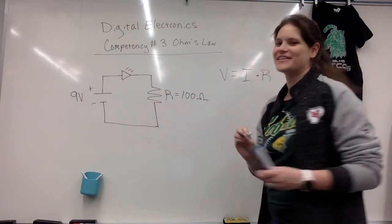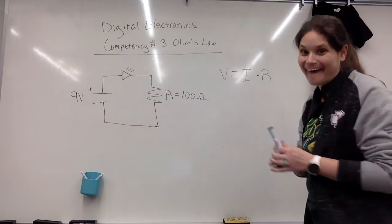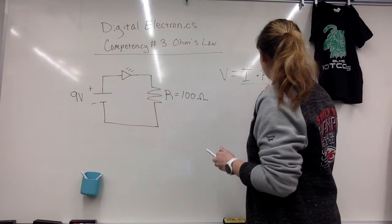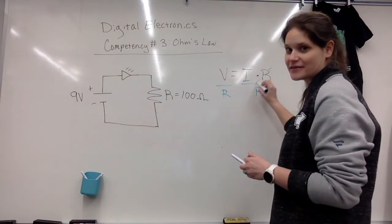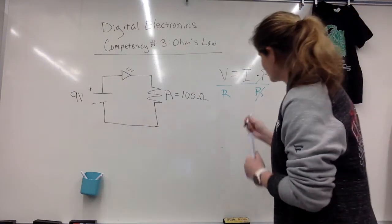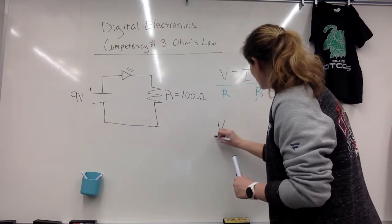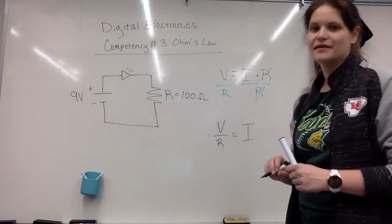Alright, let's try that again. We want to get I by itself. We have to divide both sides by R. R, R, it cancels here. Okay. And then we're left with V over R is equal to I. There we go.